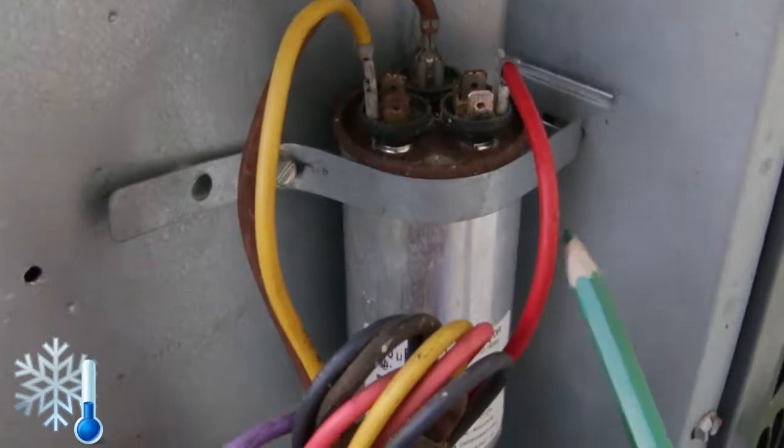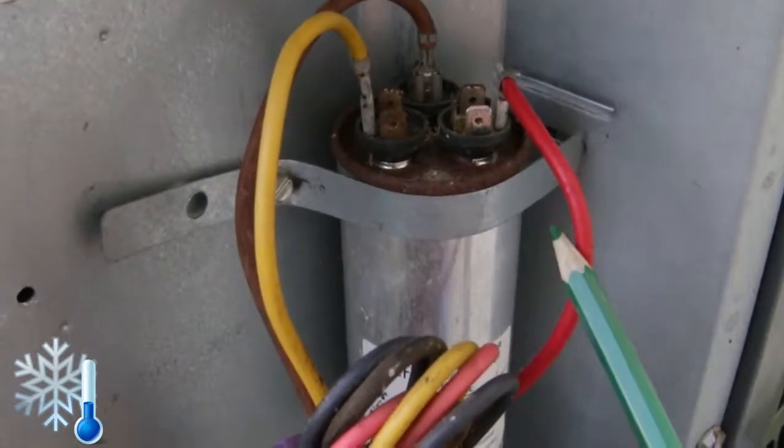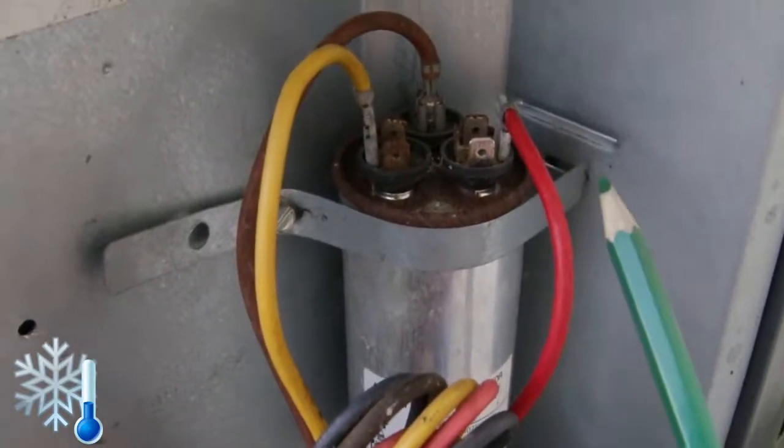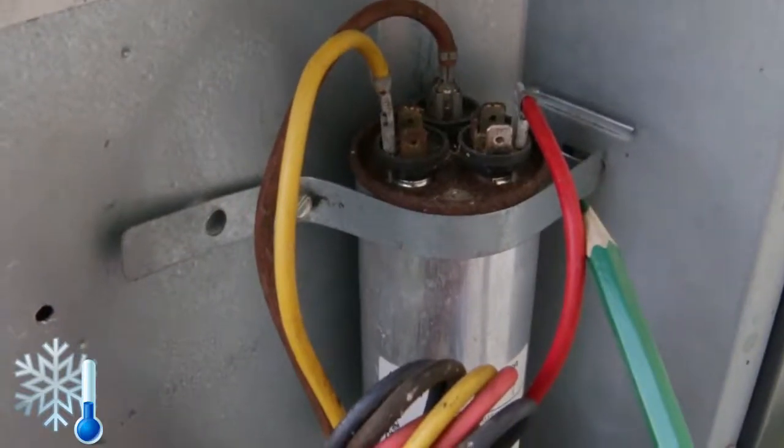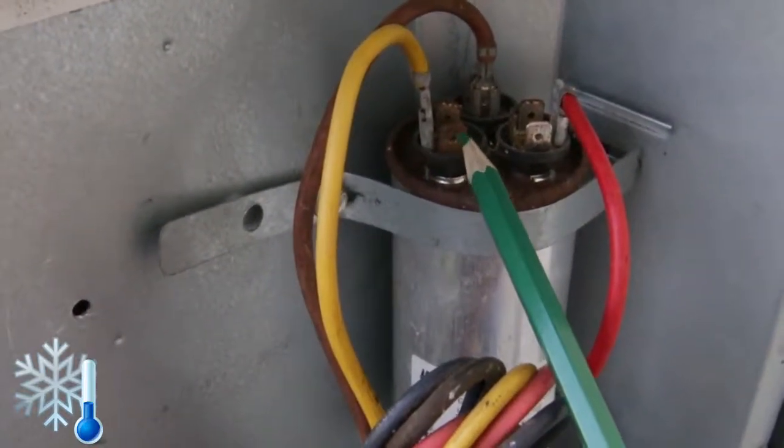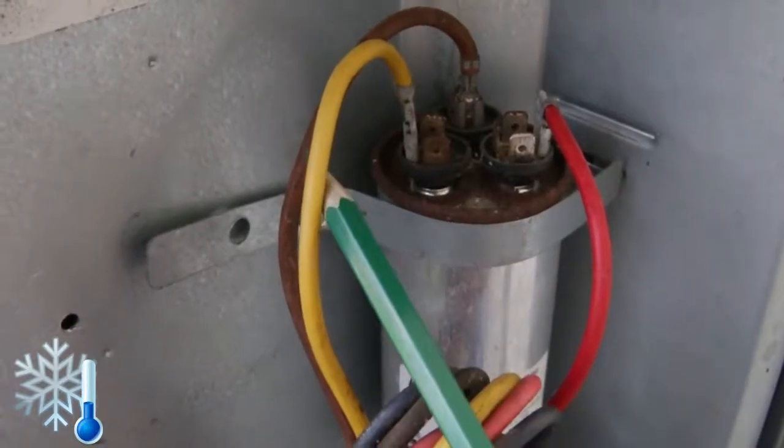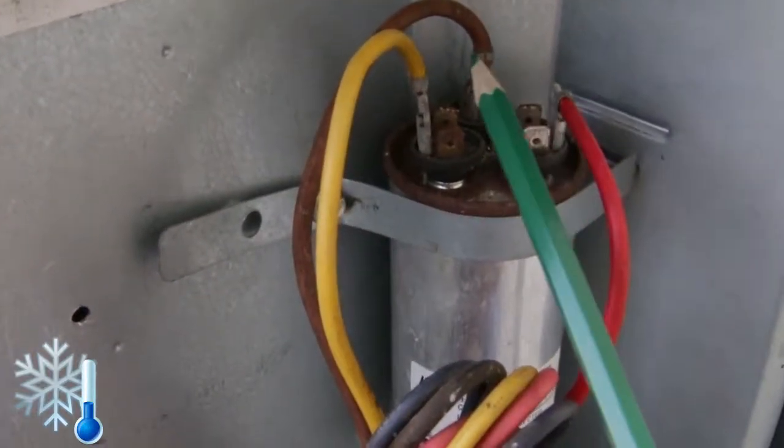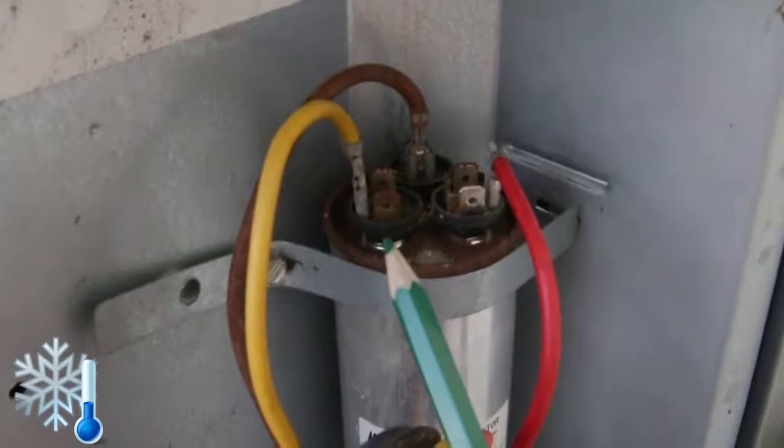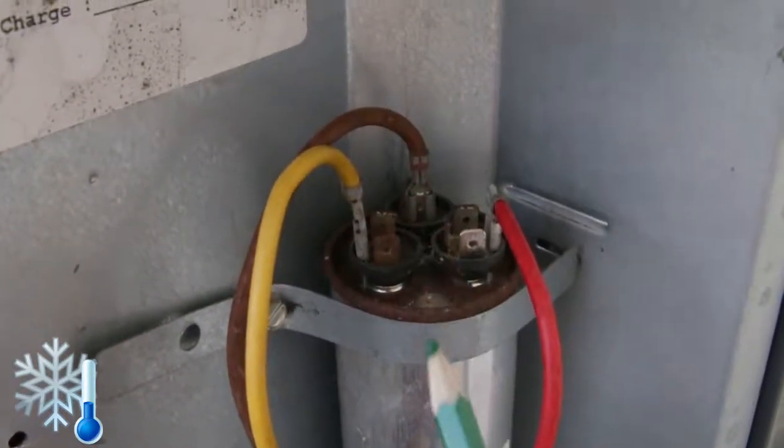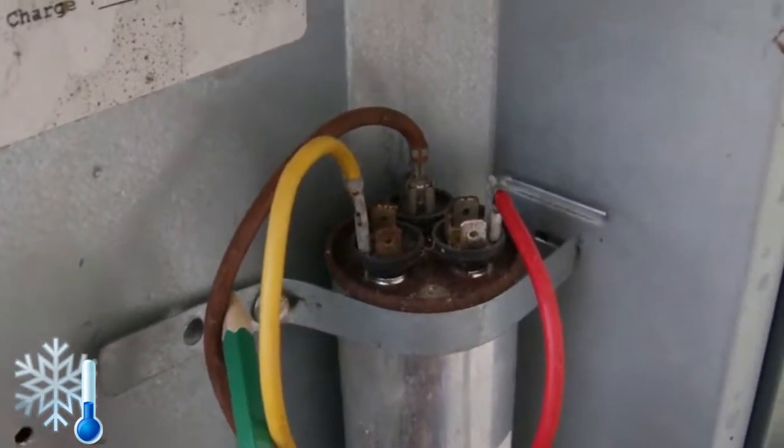Here we get the red wire coming from the contactor, that's the common. Then we get the terminal for the compressor herm, that's the yellow wire, and then we get the brown one for the fan motor.